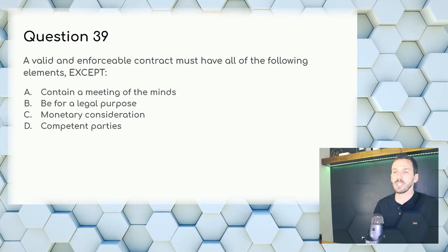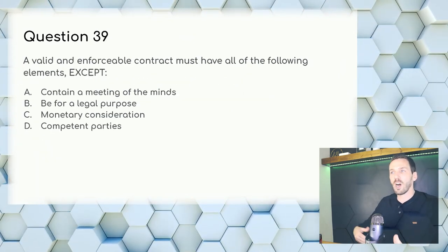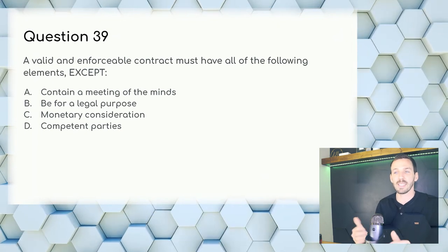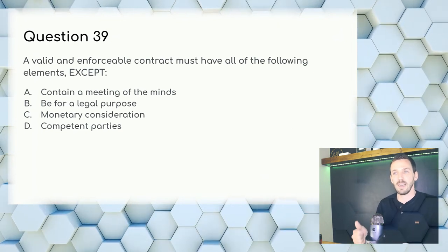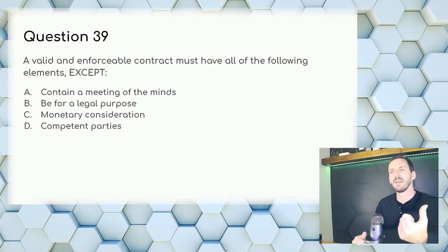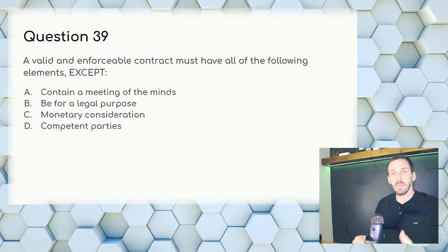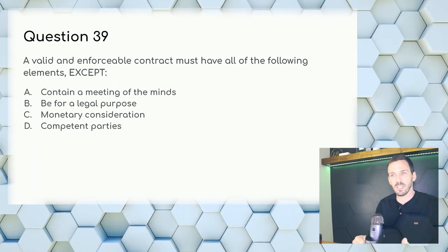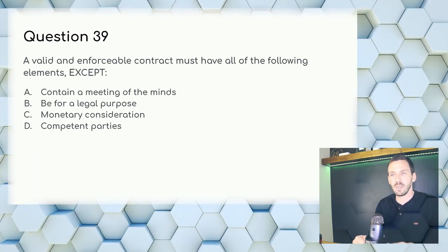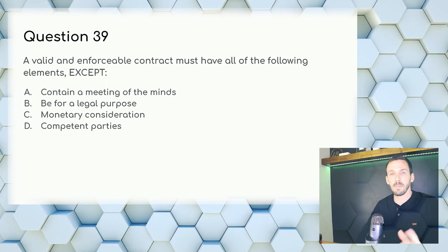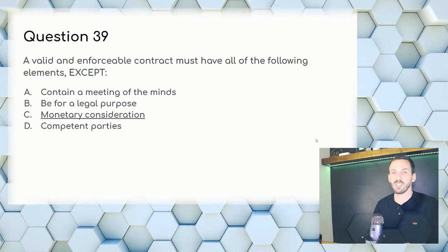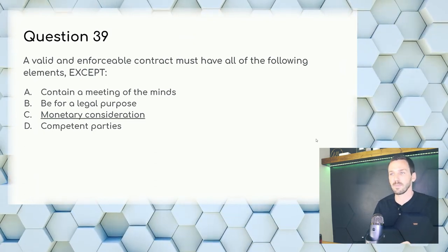Question 39: A valid and enforceable contract must have all of the following elements except — money doesn't have to be included in a contract. Answer: C, monetary consideration.